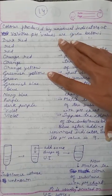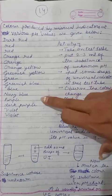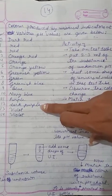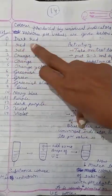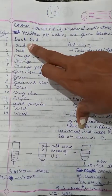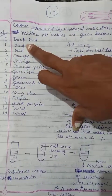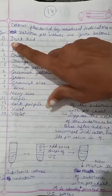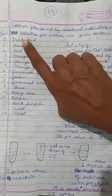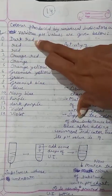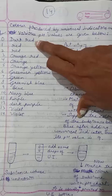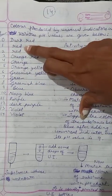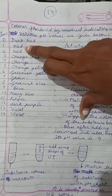Different pH values are given below. We have tabulated here that at which pH the color of the universal indicator will be as follows. Suppose the pH value is 0, then the universal indicator color will be dark red. If the pH value is 1, the color of the universal indicator will become red.